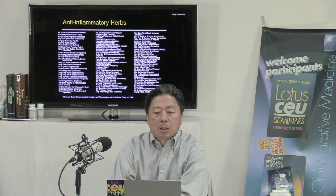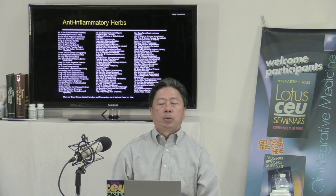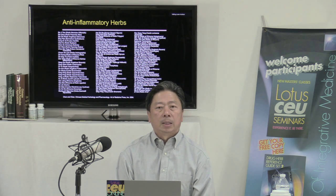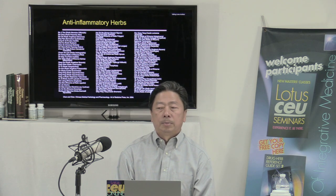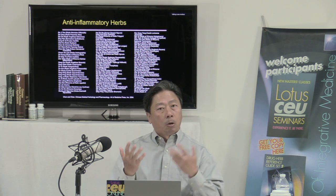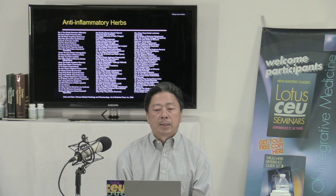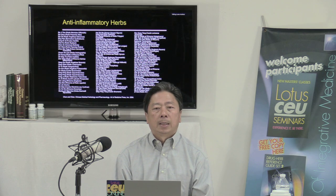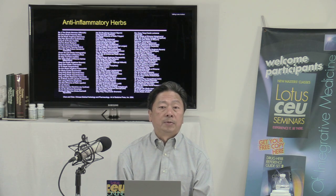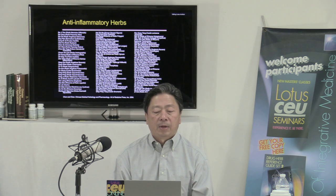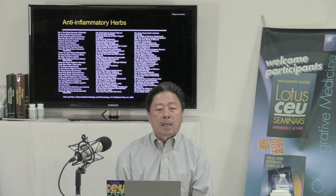Now let's switch gear from western medicine to Chinese medicine. In Chinese medicine we generally use more artistic or philosophical terms — herbs that 'clear heat,' 'drain fire,' and so on. But as you drill down and analyze the herbs in their pharmacological effect, you will notice that there are in fact many herbs that have anti-inflammatory effect and work on many different pathways. These are some examples of herbs with anti-inflammatory effect.